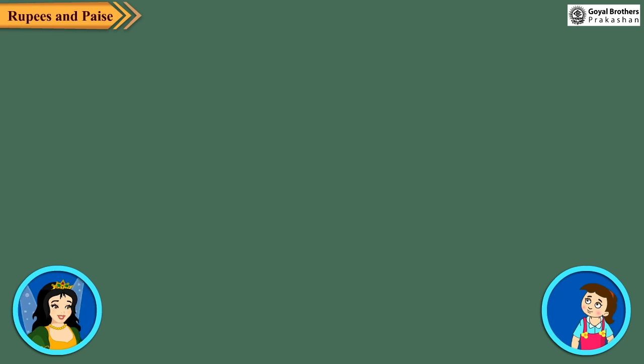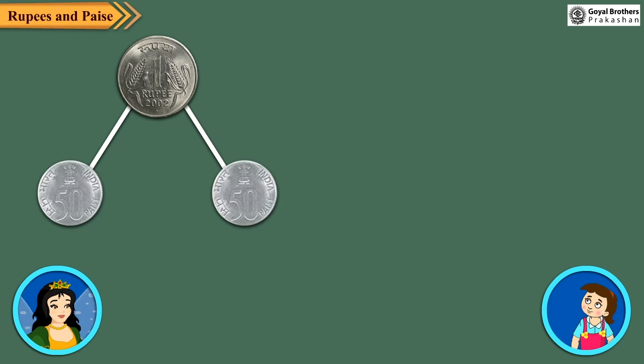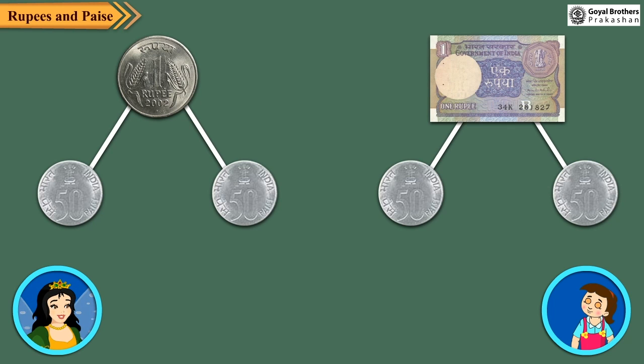It means if we have two 50 paise coins, we can get 1 rupee coin or a 1 rupee note for these.